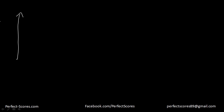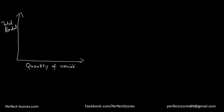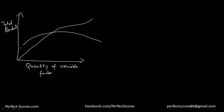So we actually defined what is total product, and from there we defined what is the marginal product and what is the average product. So let's carry on from the graph we discussed last time, involving the total product and the quantity of variable factor. We had the total product, we had our average product, and we had our marginal product.